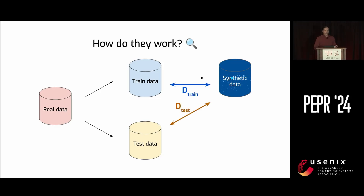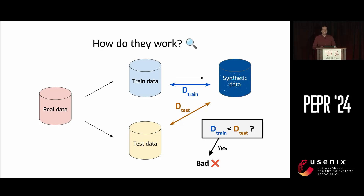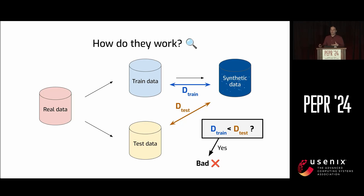Then you compute a second distance, this time between the synthetic data and the test data. This gives you two numbers in total, so you do the natural thing and compare them. Is the distance to the training data smaller than the distance to the test data? If yes, that's bad — it means you generated records that are close not just to the distribution of the data, but to the specific points used for generation. That could be a sign that you leaked some private information — very similar to machine learning overfitting. Conversely, if the two numbers are roughly the same, or even if the distance to the training data is larger, that means we're fine — we didn't leak any sensitive data.